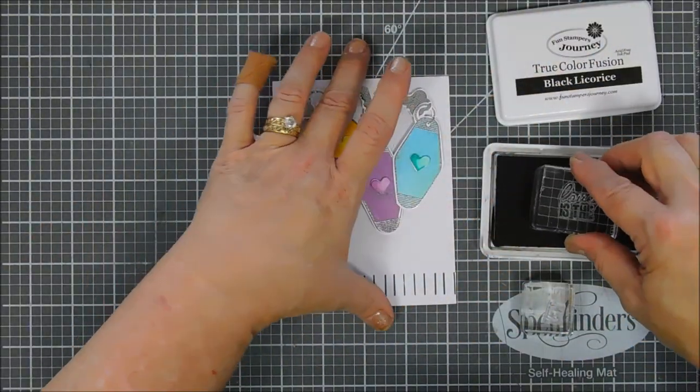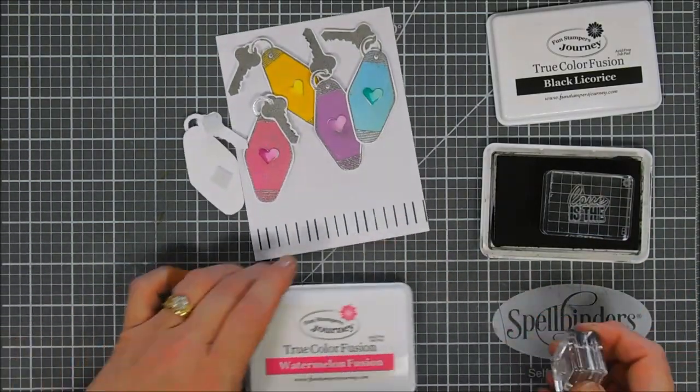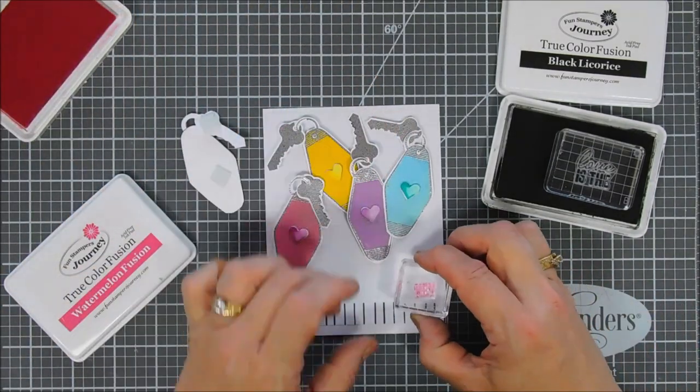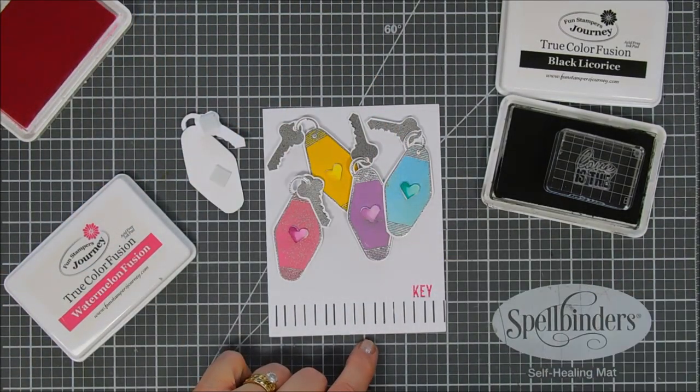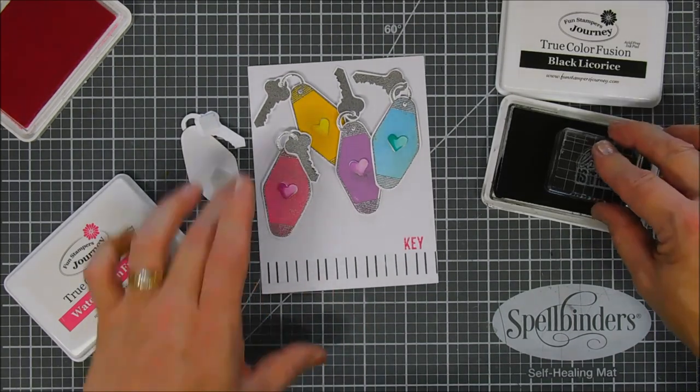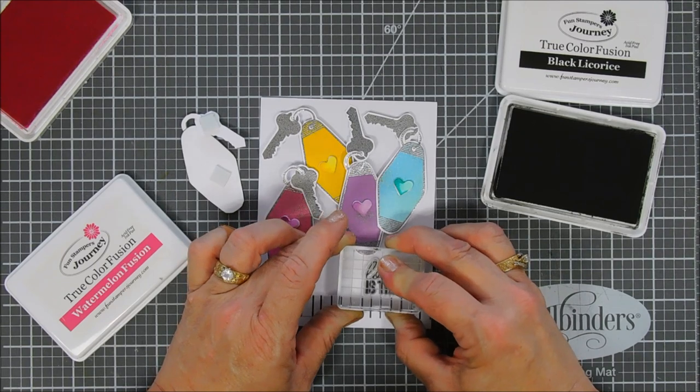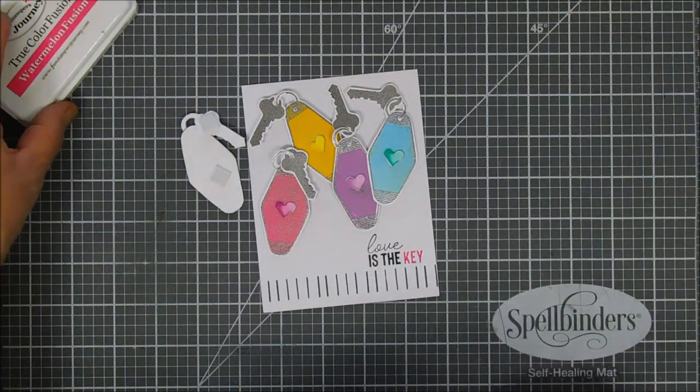We're going to start off actually by stamping the key with our watermelon fusion ink. We're going to stamp the key first and then like I said this is a customizable sentiment set so I think it's super neat. Next I'll stamp love is the with my black licorice ink and it's going to work out great.